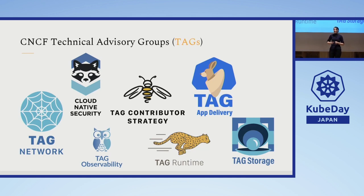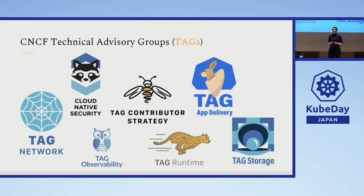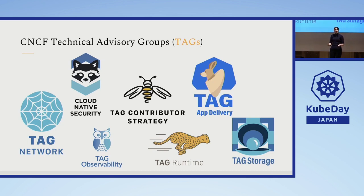Within the CNCF, we have seven TAGs that focus on very specific areas. Some of them have already been talked about, such as networking, runtime, storage, observability, and many more. I definitely invite you to check these TAGs — all of the information is publicly available on GitHub, such as meeting notes and meeting invites. So there is no gatekeeping for you to get involved right now.